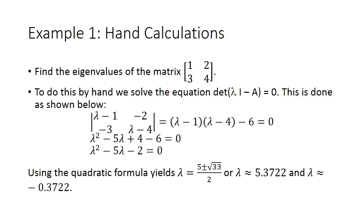For our first example, we will find the eigenvalues of the matrix 1, 2, 3, 4. To do this by hand, we solve the equation: the determinant of lambda I minus A is equal to zero, and this is done as shown below.